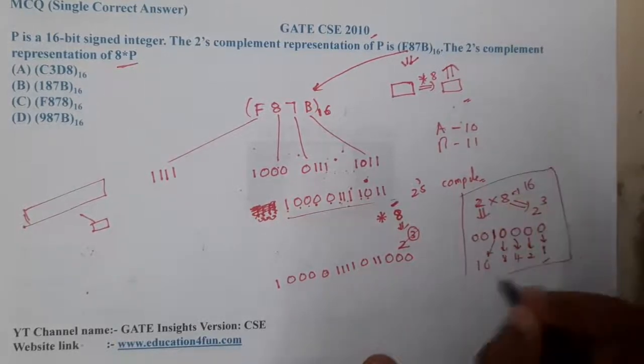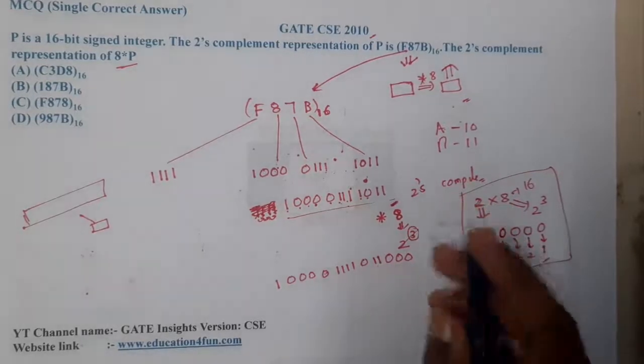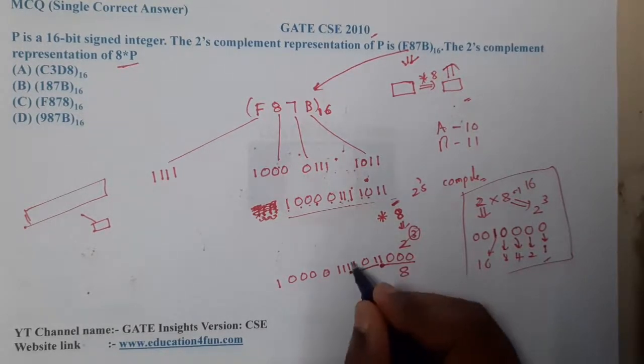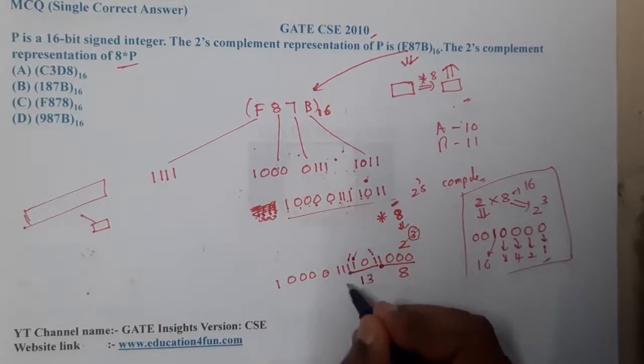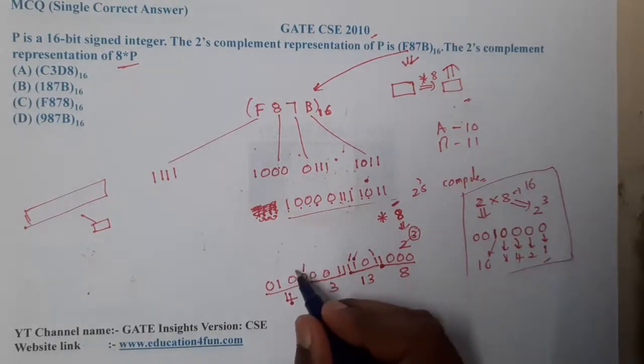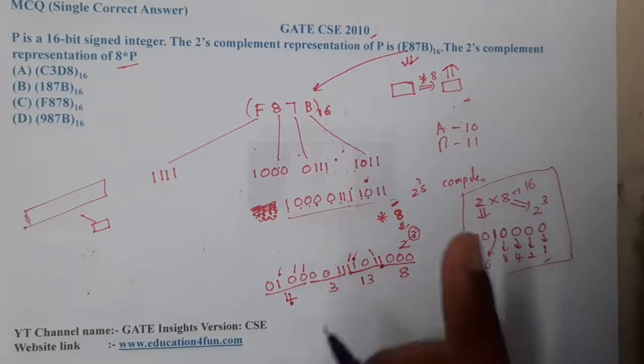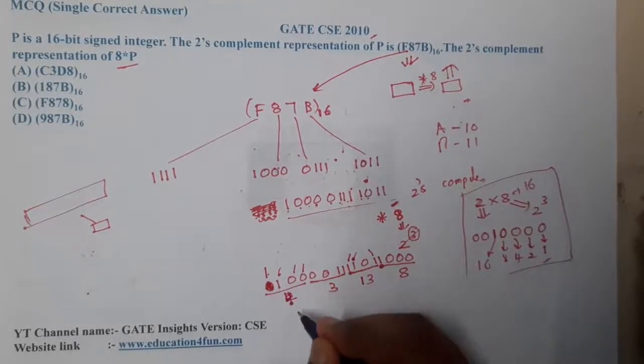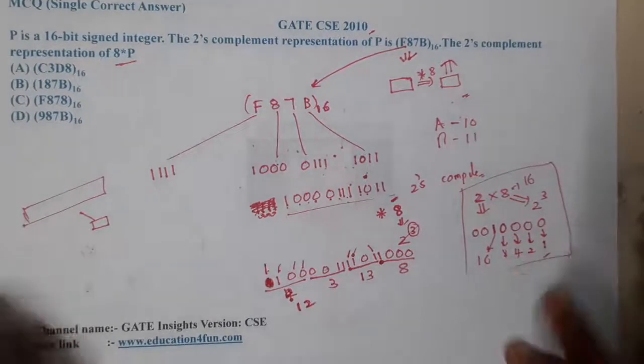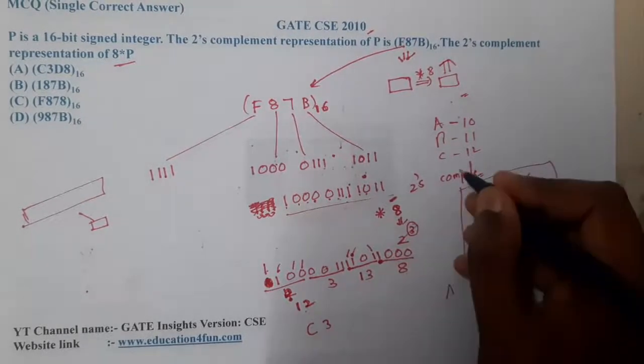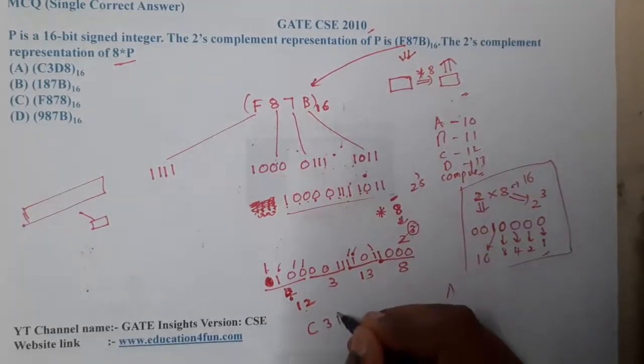Now start writing this in hexadecimal. We want the result also in hexadecimal. What are the next four bits? It is 8 plus 4, that is 12, plus 1 is 13. What are the next four bits? It is 3. What are the next four bits? It is 8 plus 4, which is 12. What is 12? A is 10, B is 11, C is 12, so C. What is 3? That is 3. What is 13? D is 13. So C3D8 base 16. This will be the result. Option A will be the correct answer.